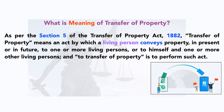To one or more living persons means you can sell your property to one person or more than one person — a few people can buy jointly. Or the transfer can be to himself and one or more other living persons. 'To himself' means that if the property belongs to more people as joint property, or in some other condition, then you can sell that property to yourself or to yourself and some other people jointly. This is the definition of transfer of property according to Section 5 of the Transfer of Property Act.